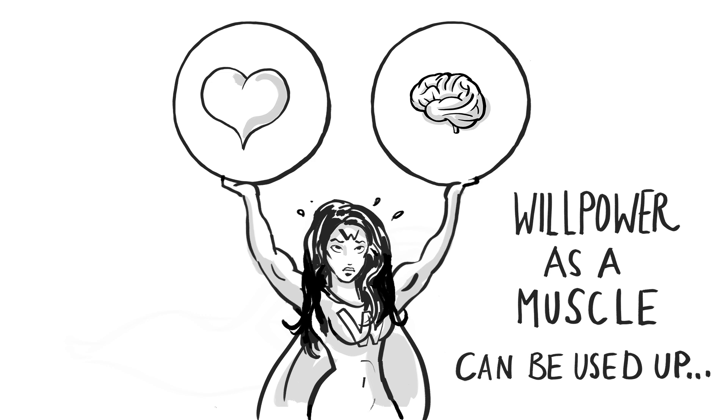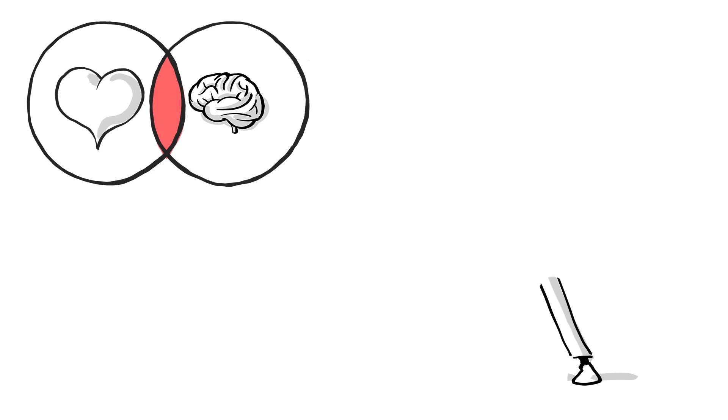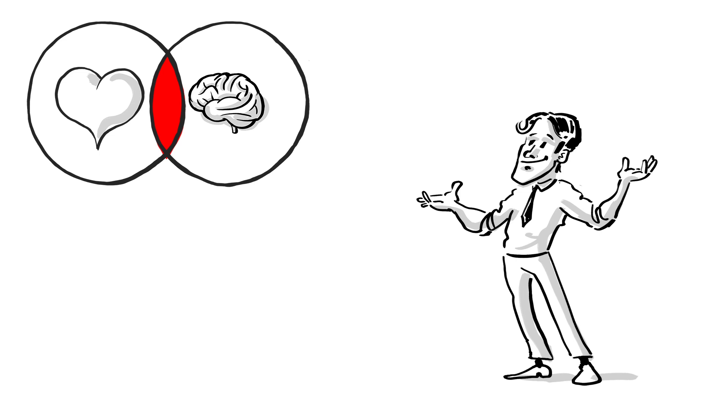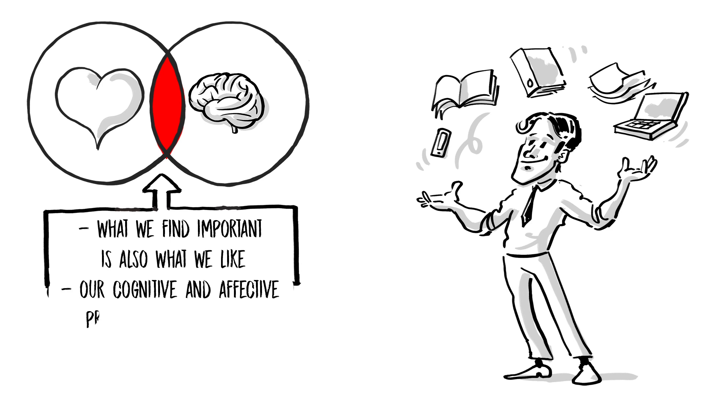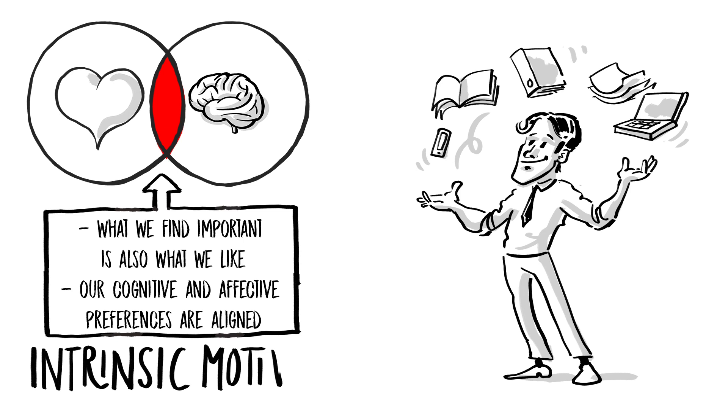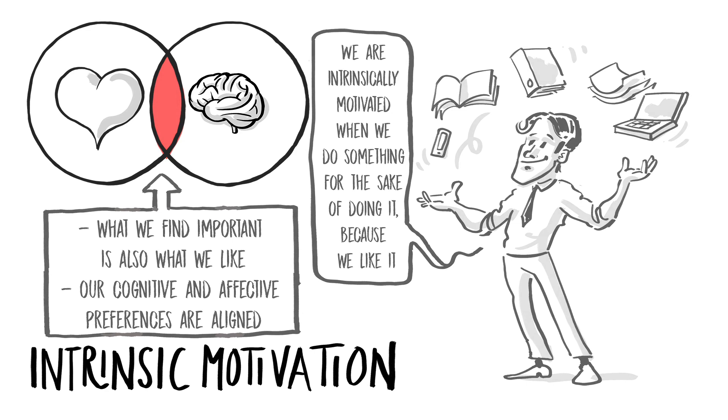But what if there is a fit between head and heart? What can we expect here in the overlapping section between the two circles? The overlap says that what we find important is also what we like. In other words our cognitive and affective preferences are aligned. Indeed this is the sector of our intrinsic motivation. I guess most of you are familiar with the concept of intrinsic motivation. We are intrinsically motivated when we do something for the sake of doing it. Because we like it.